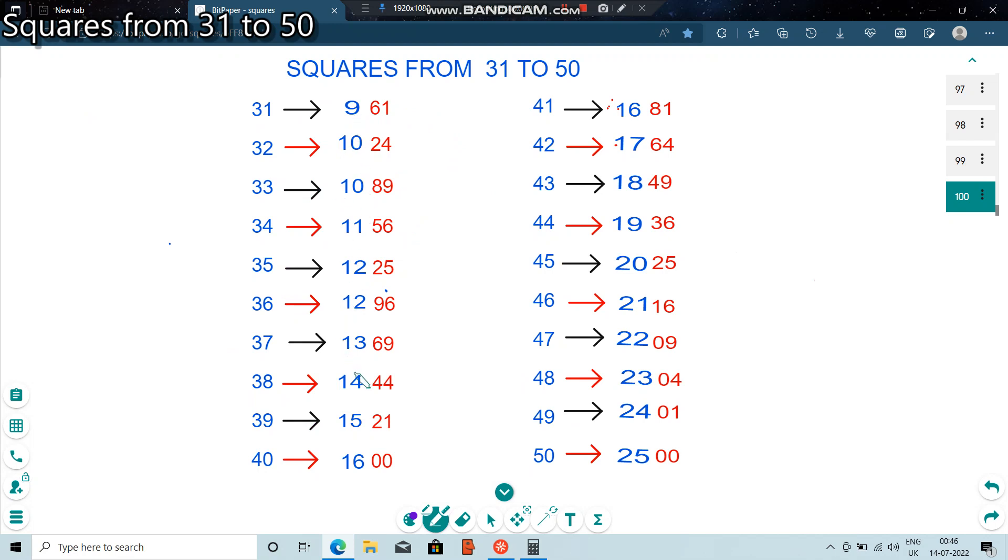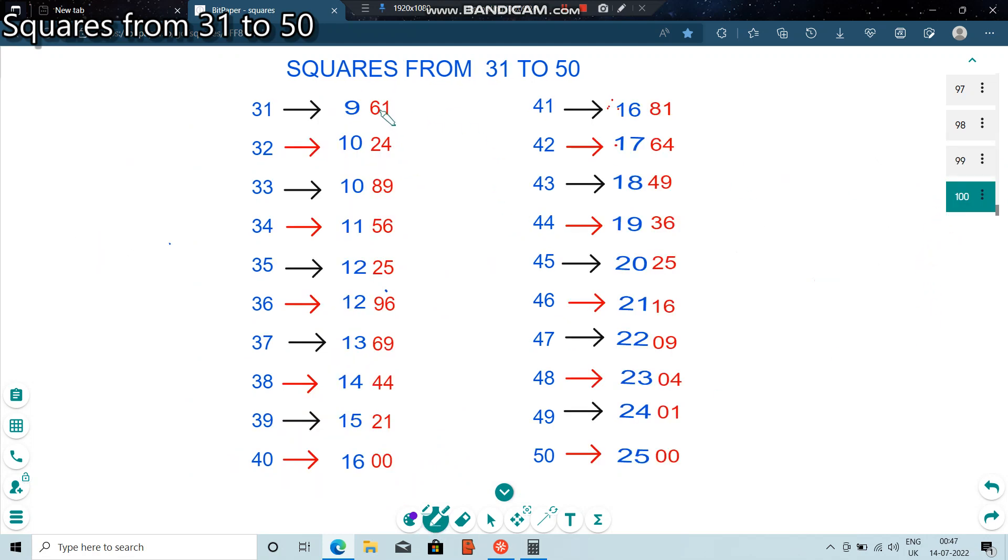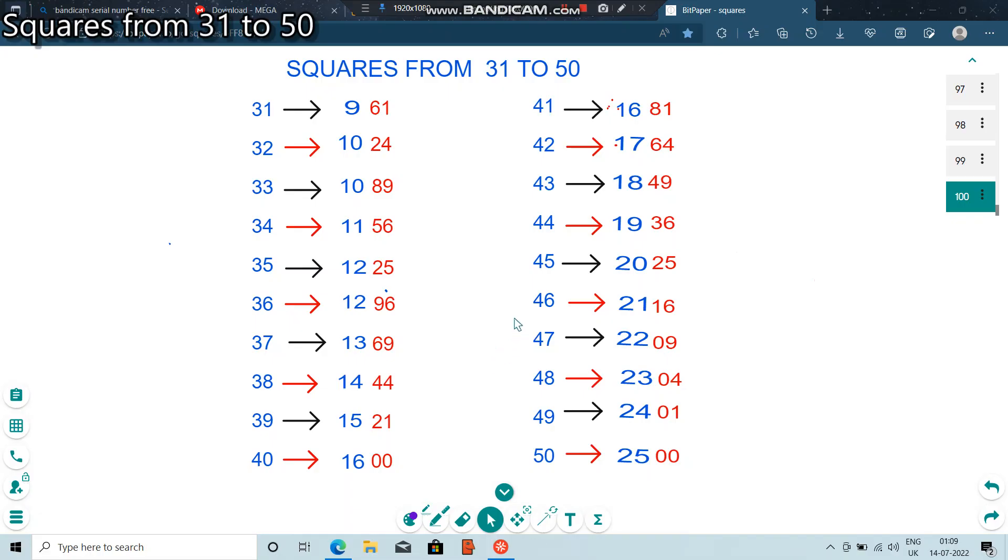So, here I have written in different color, blue and red. You can clearly note here, there is a sequence, 9, 10, 10 is 2 times, 11, 12, 2 times, 13, 14, 15, 16. Then here, every time we will be adding, starting from 63, we will be adding. Once we know the secret pattern, we can easily find the square from 31 to 40.